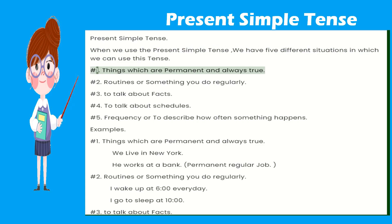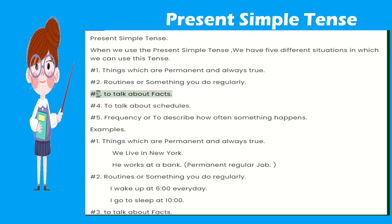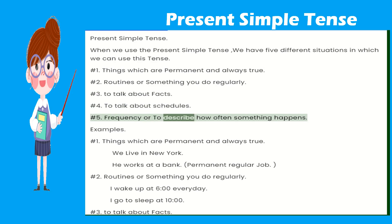Number one: things which are permanent and always true. Number two: routines, something you do regularly. Number three: to talk about facts. Number four: to talk about schedules. Number five: frequency, or to describe how often something happens.